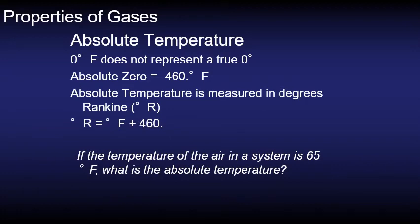So if the temperature of the air in a system is 65 degrees Fahrenheit, what is the absolute temperature? We will just add on the 460 and in this case we would have 525 degrees Rankine.